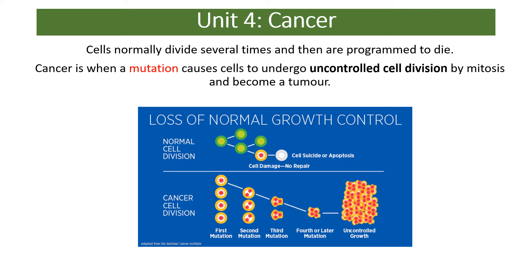Cells normally divide several times and are then programmed to die — this process is called apoptosis. A regular cell divides around 50 times and then dies, which stops too many cells accumulating. Cancer is when a mutation causes cells to undergo uncontrolled cellular division by mitosis and become a tumour. In normal cell division, a cell divides, may get damaged, and then undergoes apoptosis — it's programmed to die. But with cancer cells, the cell doesn't die; it escapes any program to stop it and becomes a tumour.